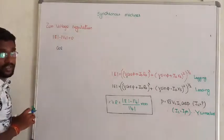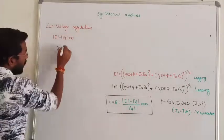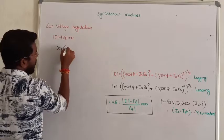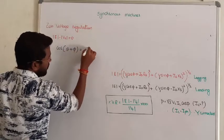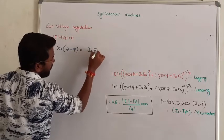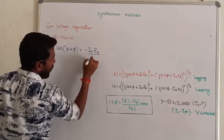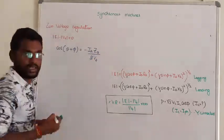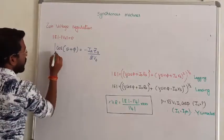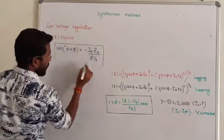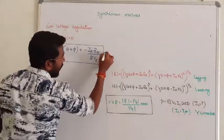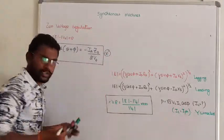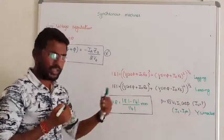After the derivation, to maintain zero regulation, cos(θ + φ) will become equal to minus R_A times I_A times synchronous impedance Z_s divided by twice the terminal voltage. This is the condition to obtain zero voltage regulation.